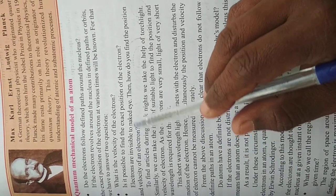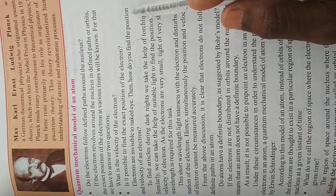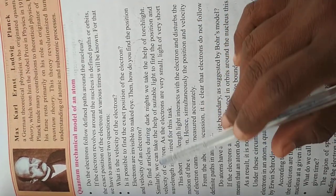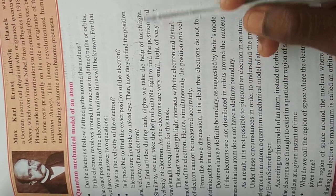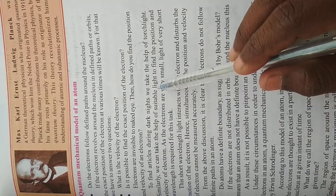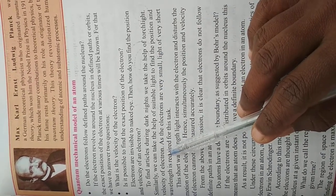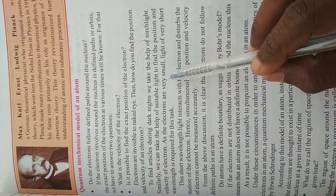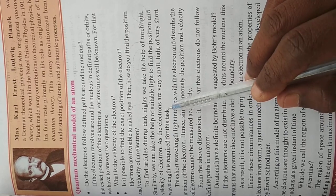Electrons are invisible to the naked eye. Then how do you find the position and velocity of an electron? To find articles during dark nights, we take the help of torch light, right? Similarly, we can take the help of suitable light to find the position and velocity of electron. As the electrons are very small, light of very short wavelength is required for this task.